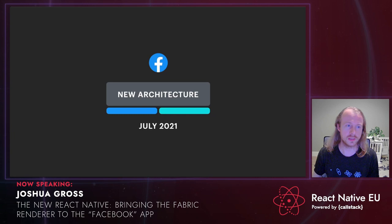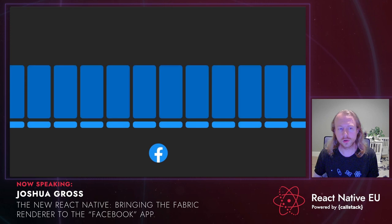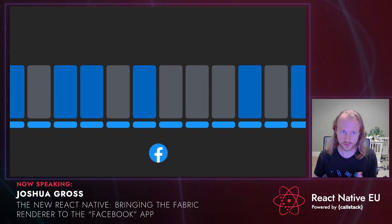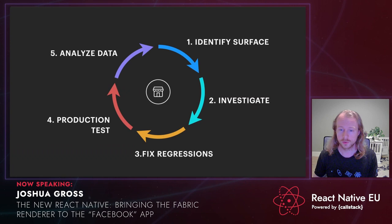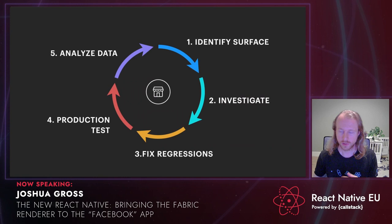Let's talk about the development and rollout process of Fabric. We modified our navigation system to support selectively turning on and off the architecture for individual surfaces, and controlling what percentage of users would get Fabric or the old renderer for a particular screen. Our work followed a cyclical pattern: identify a surface, investigate any issues, fix them or implement the new Fabric feature needed, run a production test, analyze data, fix issues again, and repeat.